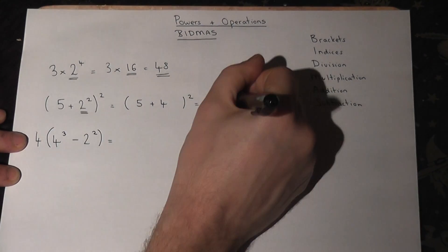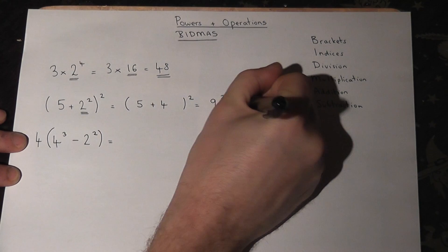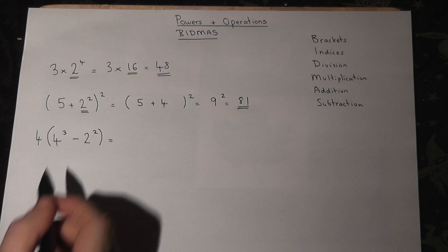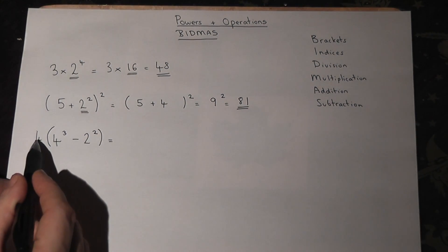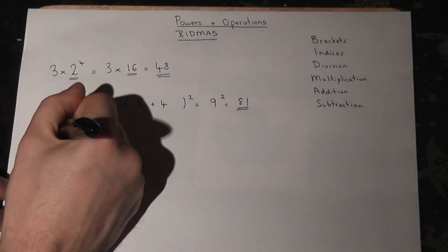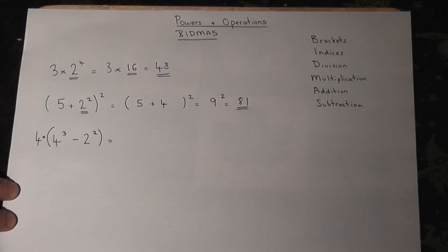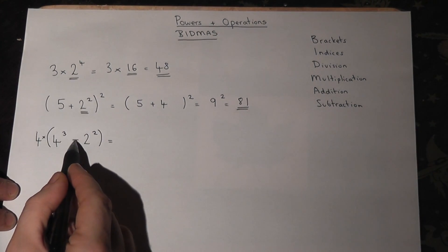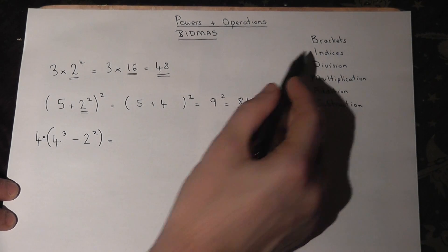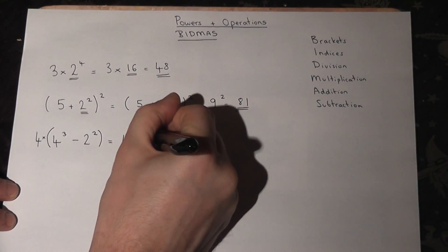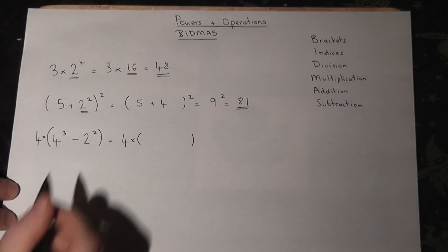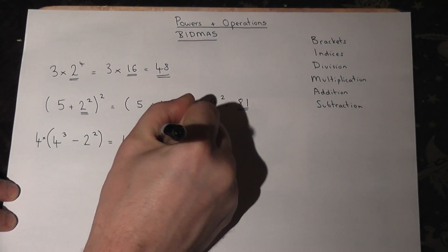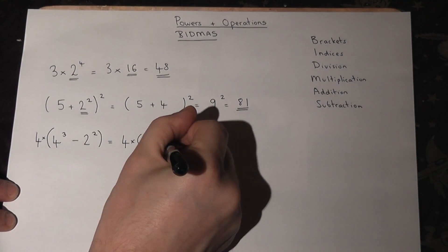Now the third one looks quite confusing, brackets again and a number there. Now this number here just means we have to times whatever that is by four. See little times there, you just can't see it. So we do the bracket first, and in the bracket we've got powers and subtraction. Well powers always come first so we've got four times, I'll leave the times in, four cubed. Four times four is sixteen times four again is sixty-four. We've got a subtraction, we must also work that power out as well, and two squared is just four.